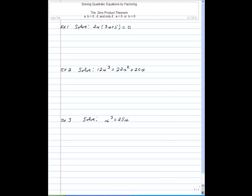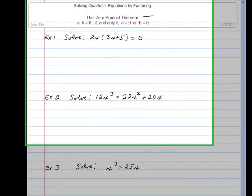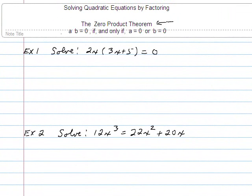One thing I do want to remind you is when you are solving quadratic equations by factoring, you are using something called the zero product theorem. The zero product theorem says if you multiply two numbers a times b and you get zero, that can only happen if a is zero or b is zero. If two numbers multiply together to give you zero, at least one of them must be zero.